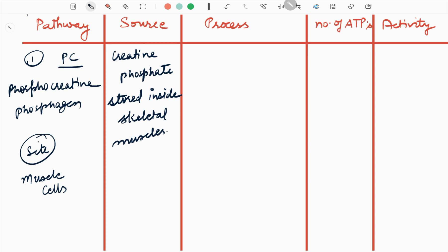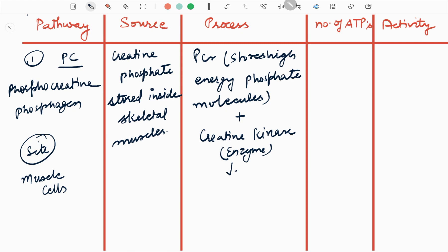And their process is: phosphocreatine stores high energy phosphate molecules plus creatine kinase enzyme liberates phosphate attached to adenosine diphosphate (ADP), which becomes ATP.